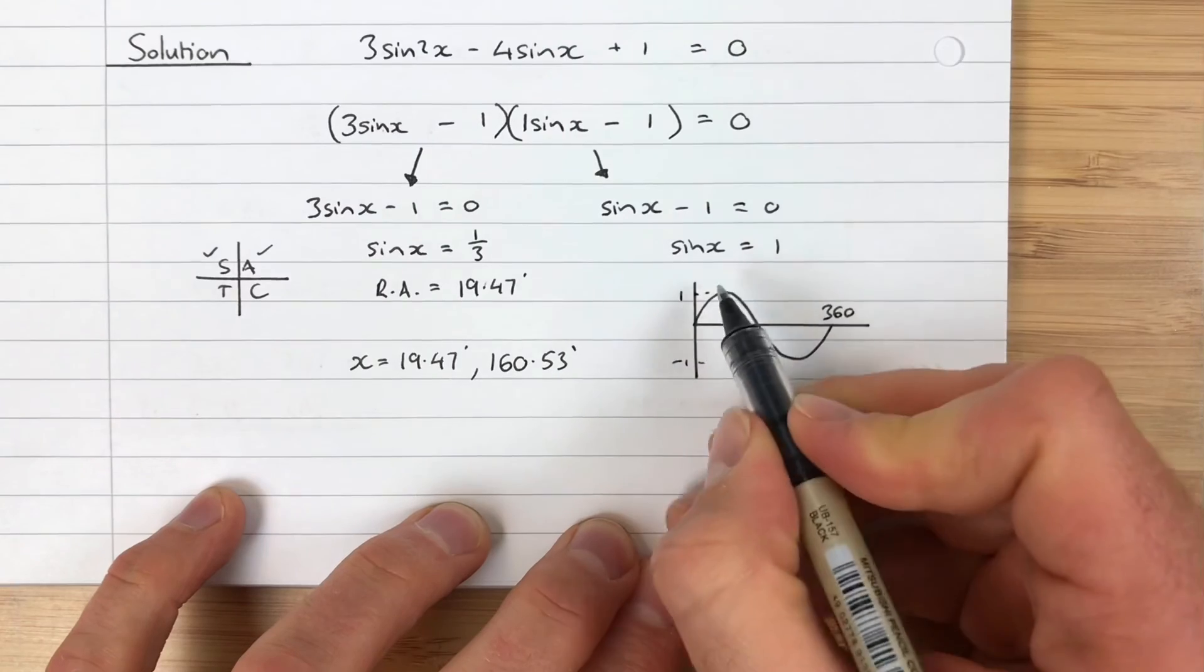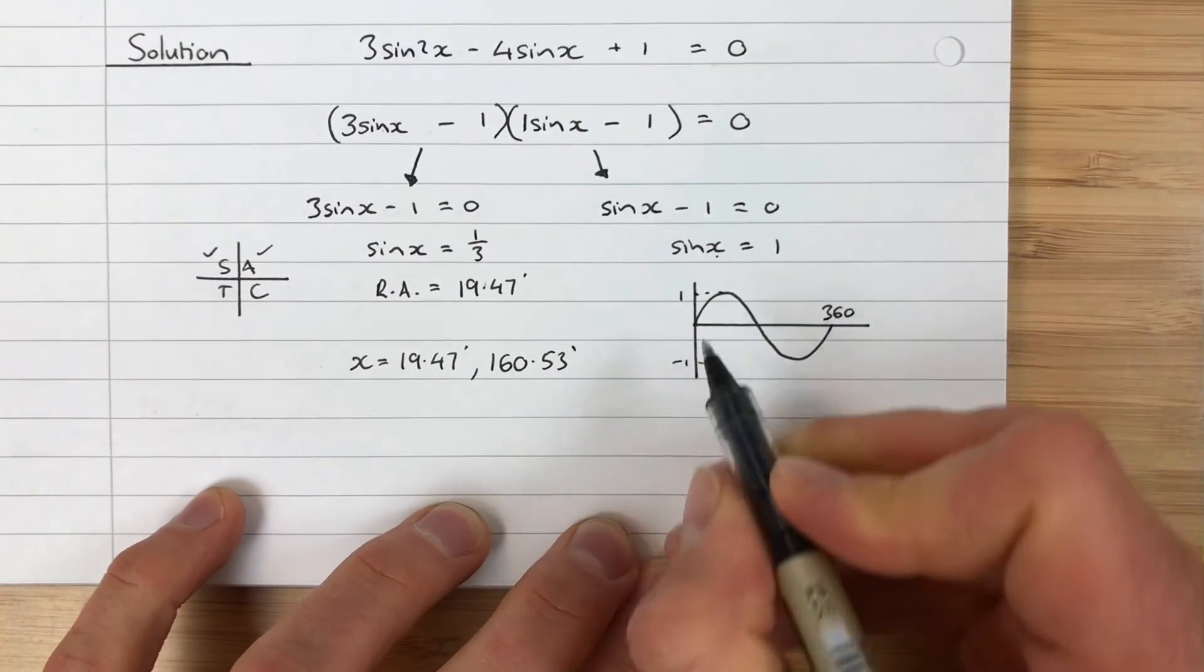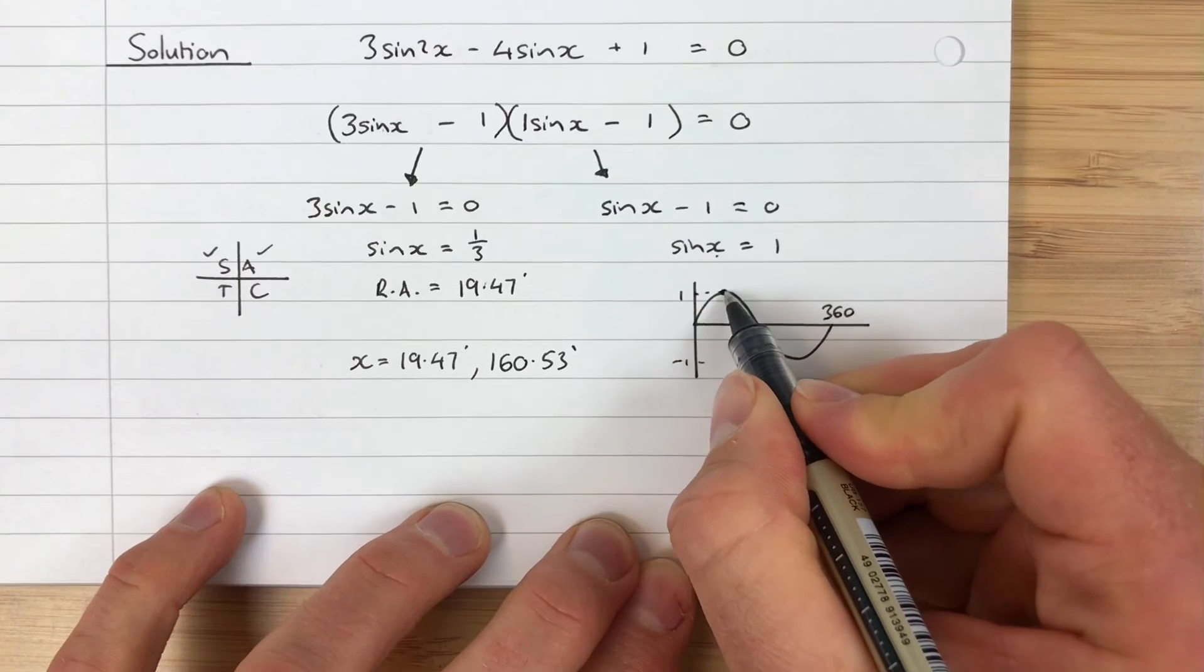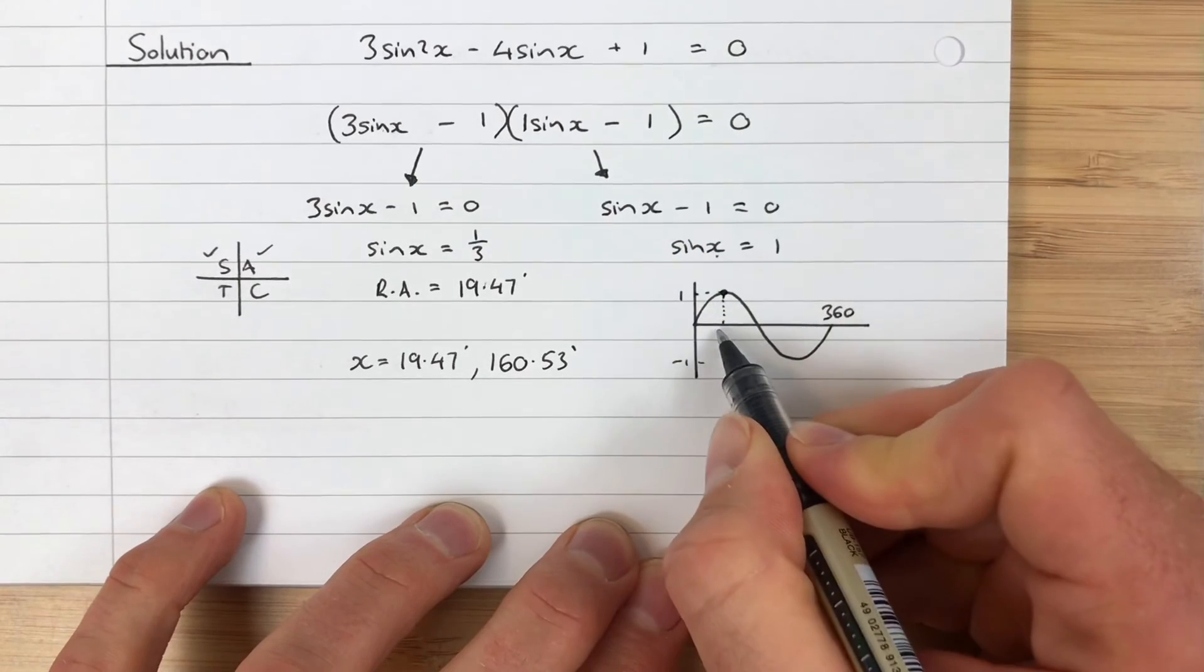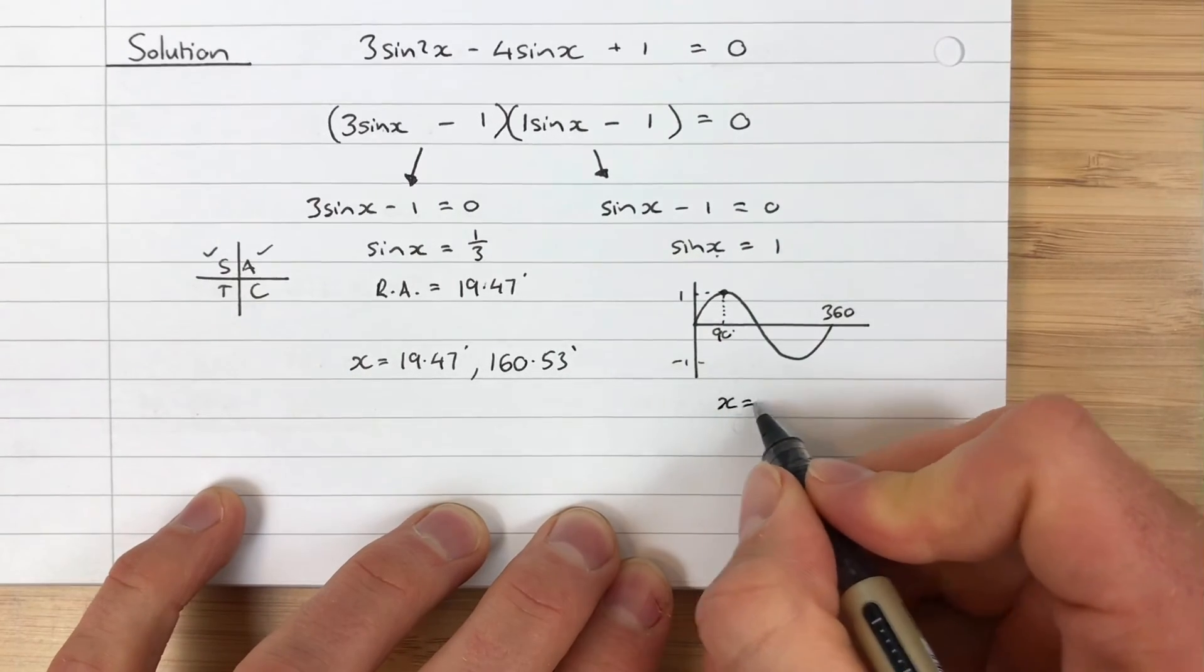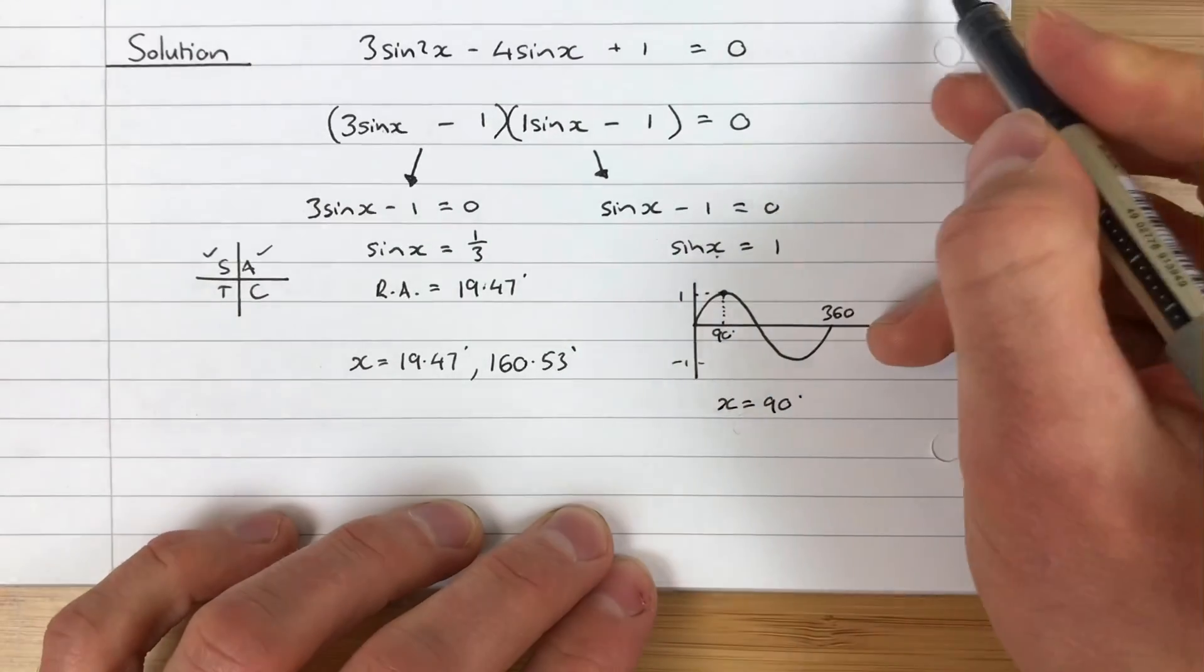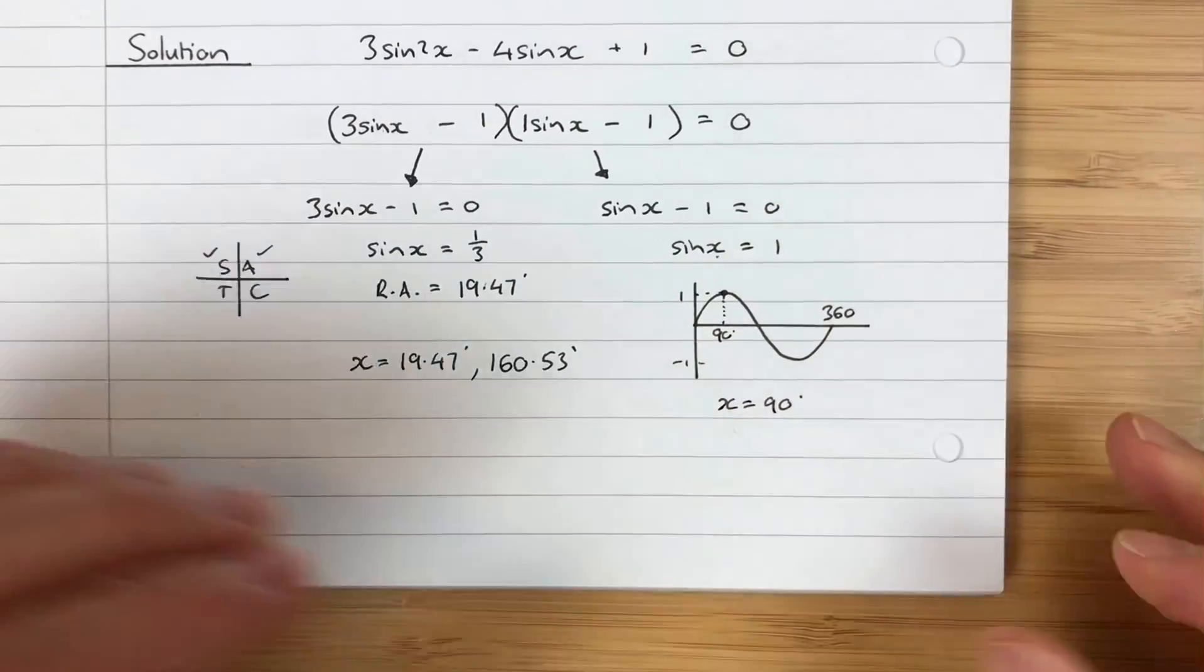sin x = 1. What x coordinate, what angle, gives me a y coordinate of 1? Well when the y coordinate is 1, the corresponding angle is 90 degrees. So the only solution for this side is x = 90° between 0 and 360, which is what we've drawn. That is the only possibility.